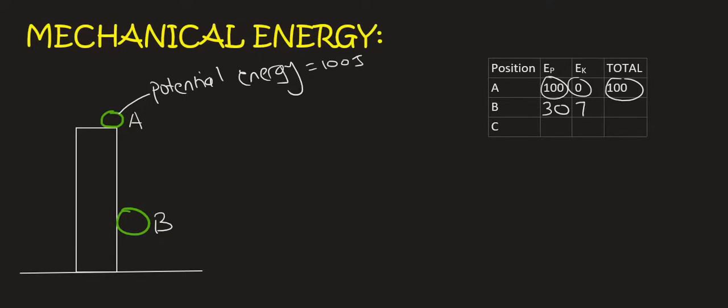That means the kinetic energy would have to be 70, so that the total is still 100. And then, the split second before it hits the ground, the potential energy would go to 0, because it's got no height. The kinetic energy would be 100, and the total energy would still be 100.